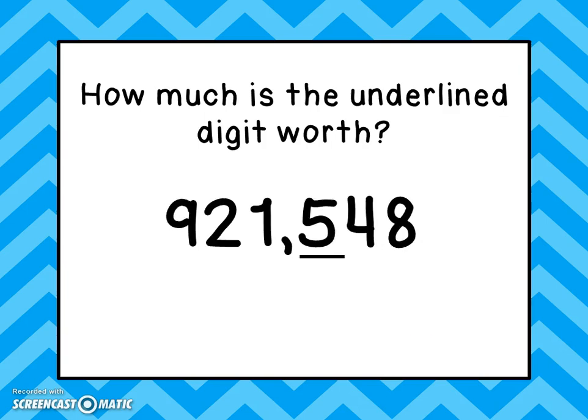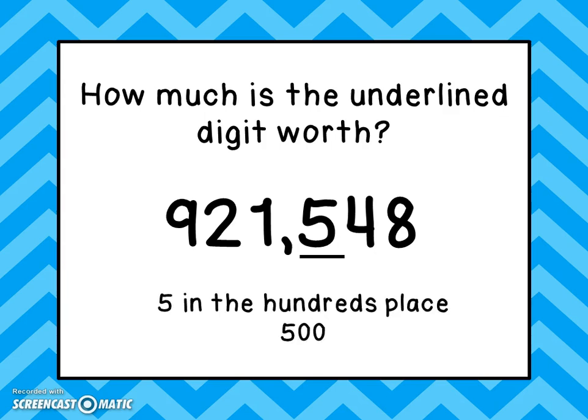In this number, nine hundred twenty-one thousand, five hundred forty-eight, we have a five in the hundreds place — it's five groups of one hundred, or five hundred.